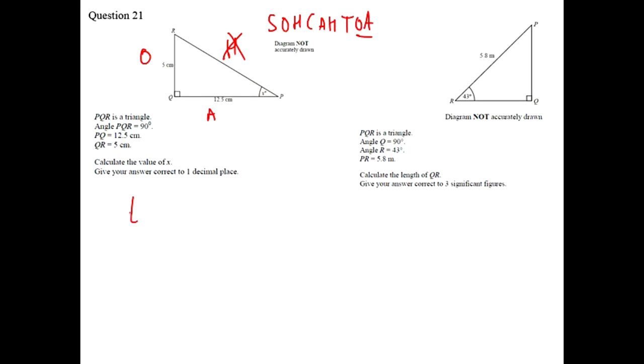And when you're finding an angle you use the inverse function, so inverse tan, and it's O divided by A. So if we draw the tan triangle we can see why it's Toa.